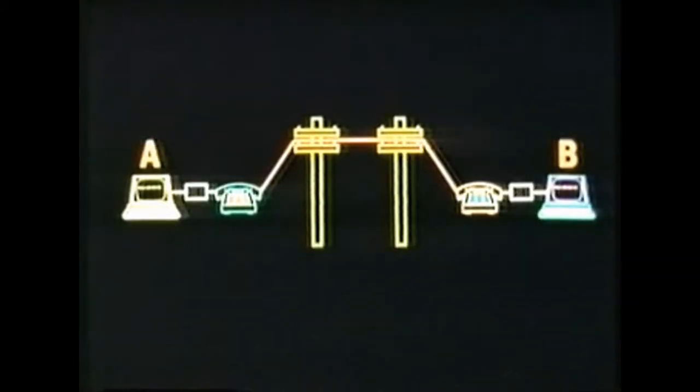So once computer A has a modulator and computer B has a demodulator, A can send messages to B. But this is only one-way communication — B still can't send messages to A.